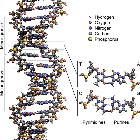The backbone of the DNA strand is made from alternating phosphate and sugar residues. The sugar in DNA is the pentose, 5-carbon sugar, 2-deoxyribose. The sugars are joined together by phosphate groups that form phosphodiester bonds between the third and fifth carbon atoms in the sugar rings. These asymmetric bonds mean a strand of DNA has a direction. In a double helix, the direction of the nucleotides in one strand is opposite to their direction in the other strand. This arrangement of DNA strands is called antiparallel.